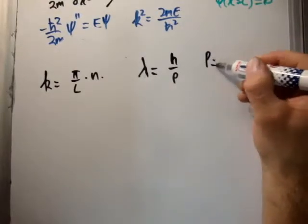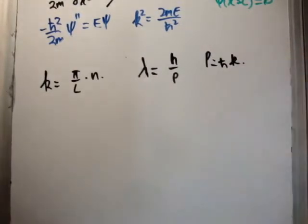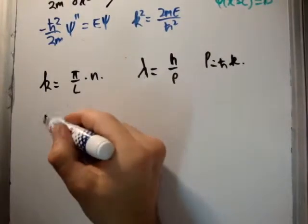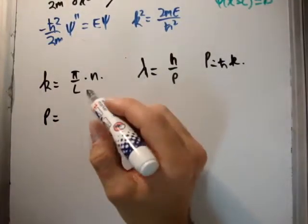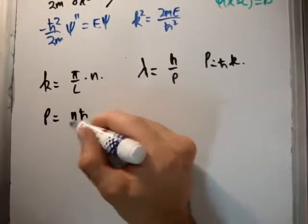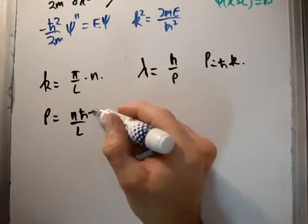We know that p is equal to h bar k. So that means we can rewrite the momentum in terms of the quantum number. So we have n h bar over L times pi like that.